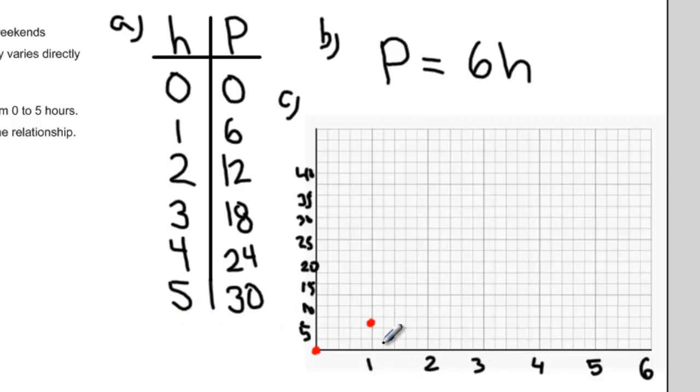And I can keep doing that, or I could just graph my first and my last point because this is a straight line relationship. Five and 30, and connecting the dots. There's the line that models how much I get paid based on how much I work.